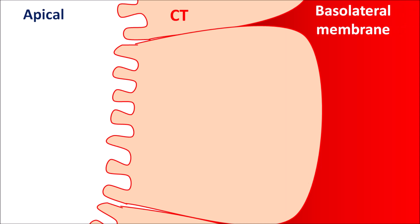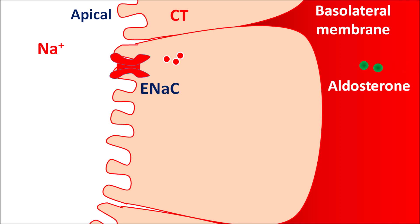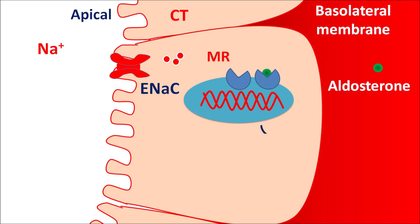Now let us see how eplerinone acts. Eplerinone acts on the collecting tubules. On the basolateral membrane side and the apical membrane (the inner membrane facing the lumen), epithelial sodium channels are present. Sodium ions in the filtrate are absorbed into the renal tubules through these epithelial sodium channels, but the expression of these channels is controlled by the hormone aldosterone. Aldosterone acts on mineralocorticoid receptors; when aldosterone binds to these MR receptors, they undergo dimerization and interact with DNA within the nucleus, producing gene transcription that results in synthesis of proteins leading to formation of sodium channels.